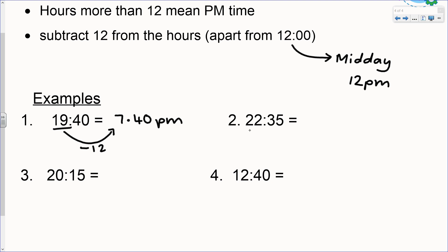Okay example two. So the hours again are more than 12. This means that we are past midday, so it is pm. And we've got to subtract 12 from the hours. So 22 take away 12 would be 10:35 pm.